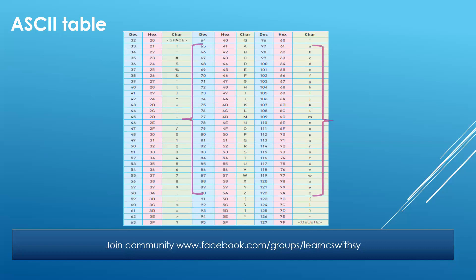Similarly, small A is represented by the ASCII value of 97. You can see they are all one after the other: after 97 is 98 for small b, then 99 for small c, then 100 for small d. It is a continuity and you can go further and further till small z, which is 122. So capital letters start from 65 and go till 90, and small letters start from 97 and go till 122.